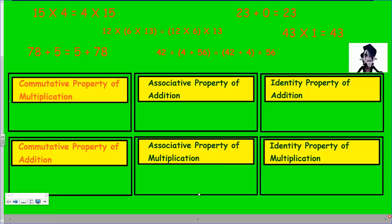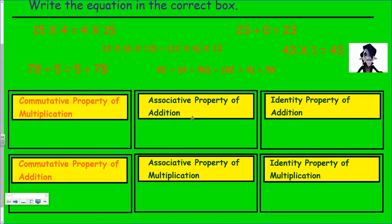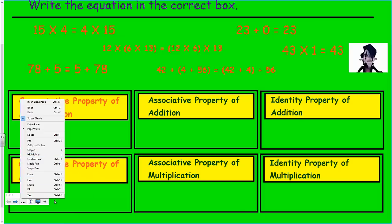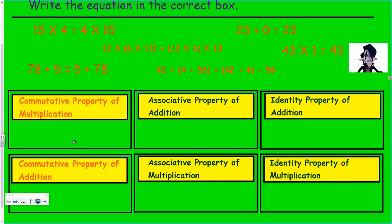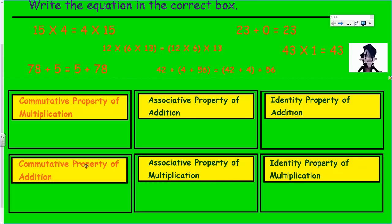We look at these equations. We have the commutative property of multiplication, the commutative property of addition, the associative property of addition, the associative property of multiplication, the identity property of addition, and the identity property of multiplication. So basically we have three properties that also have to do with multiplication but are very similar. The commutative property is pretty straightforward.